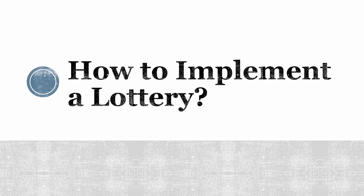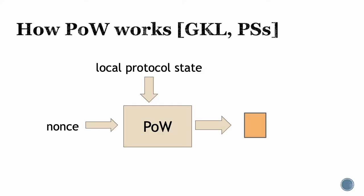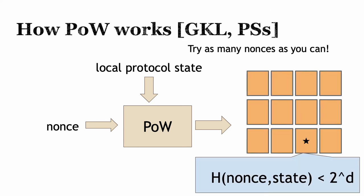Many lottery implementations have been proposed, starting with proof-of-work. In the original proof-of-work, parties take their local protocol state, sample a random nonce, and input them to the proof-of-work function. Every unique evaluation of the proof-of-work function constitutes one lottery ticket. A winning lottery ticket is found if the evaluation of the proof-of-work function on the nonce and the local protocol state is less than 2 to the d for some difficulty parameter. The name of the game is to try as many nonces as possible to evaluate as many lottery tickets as you can and thereby have the best chance of winning.